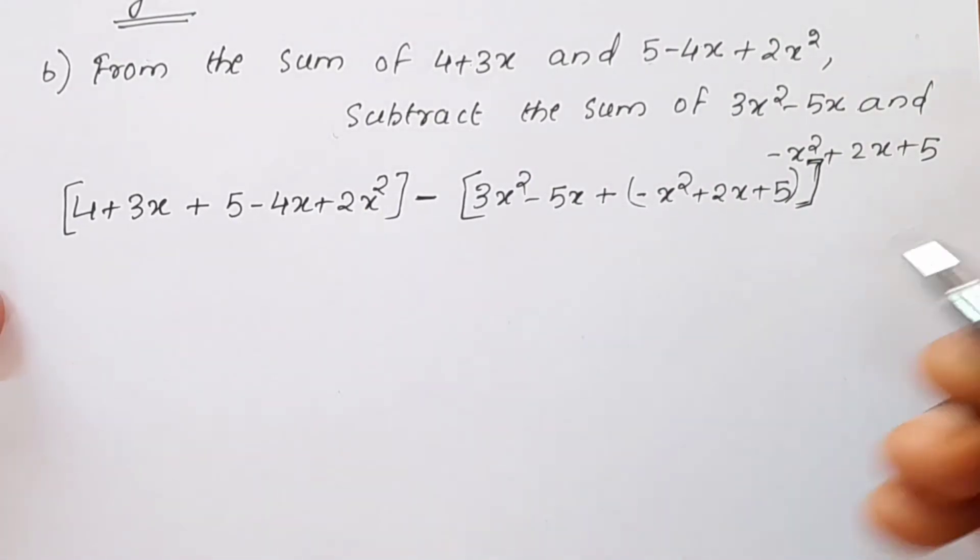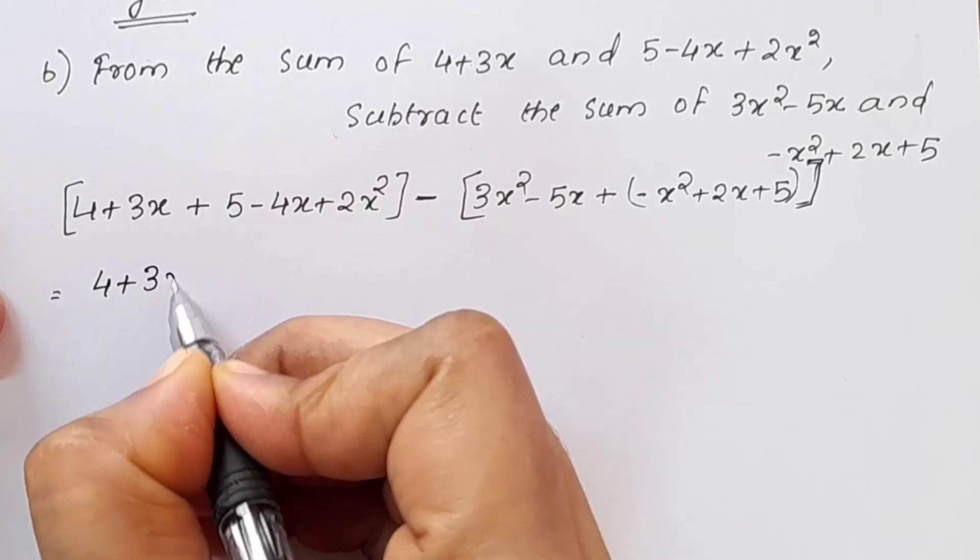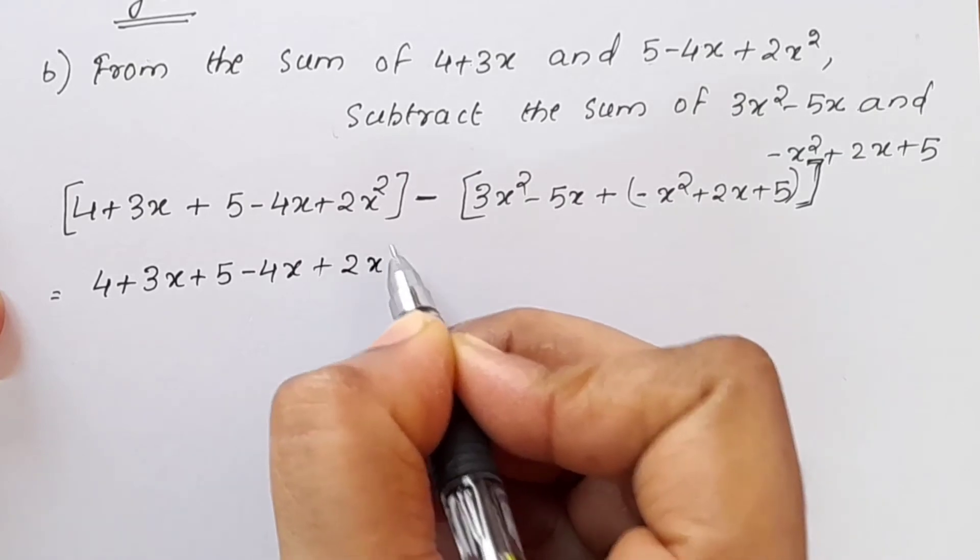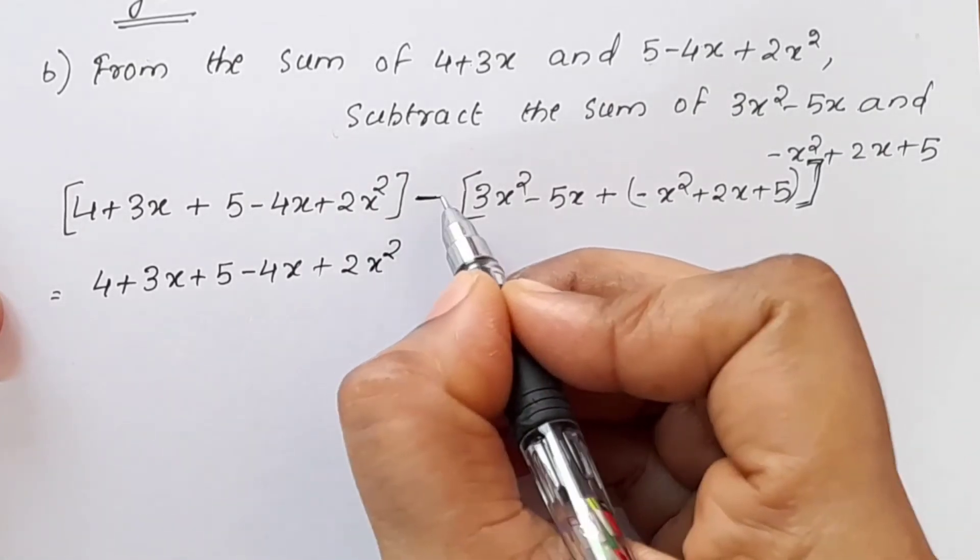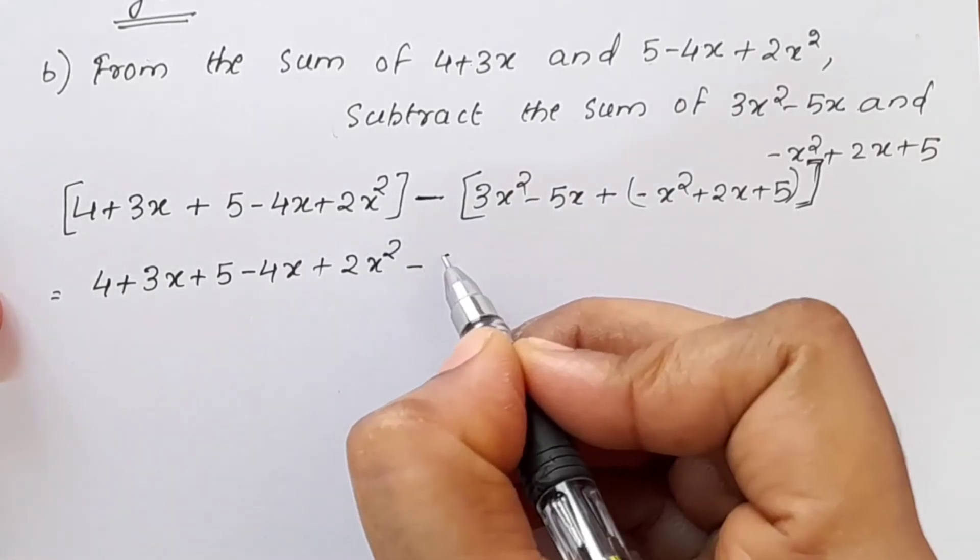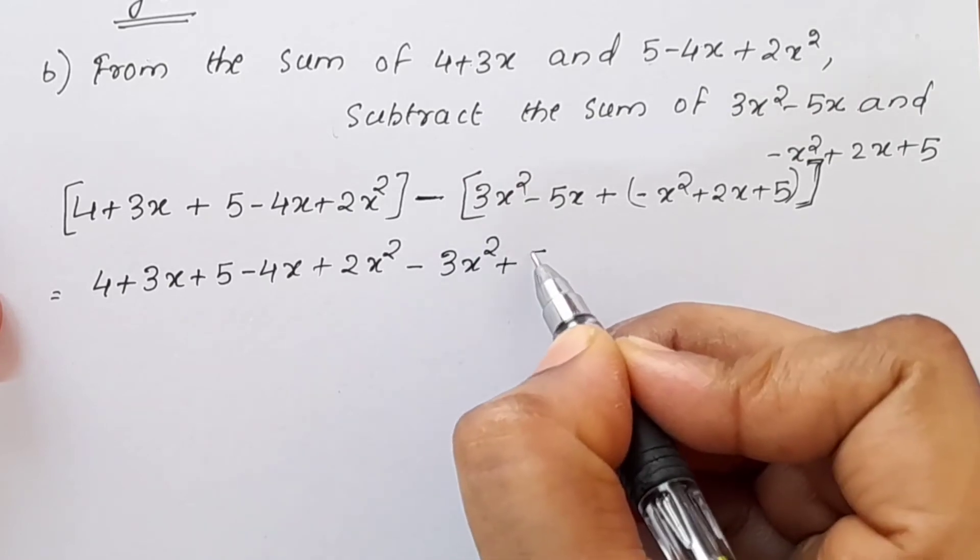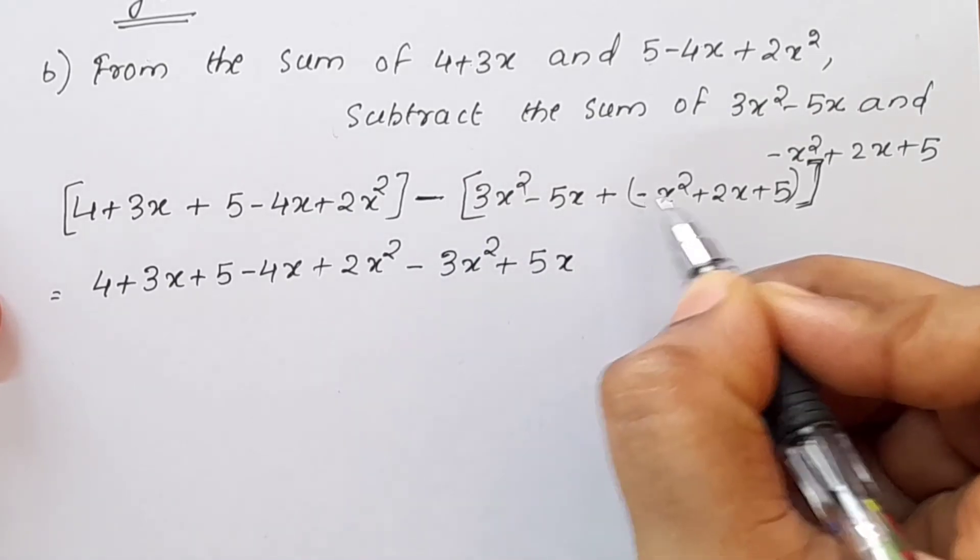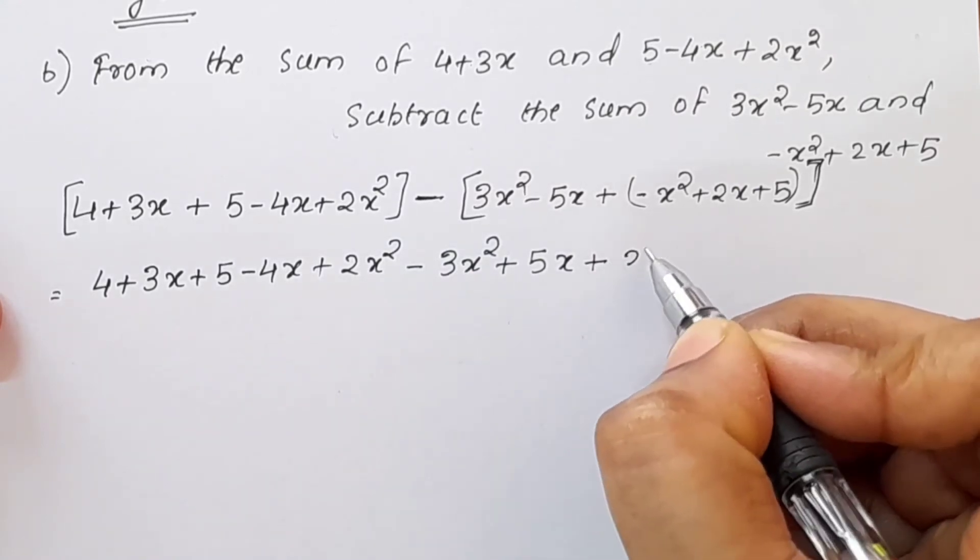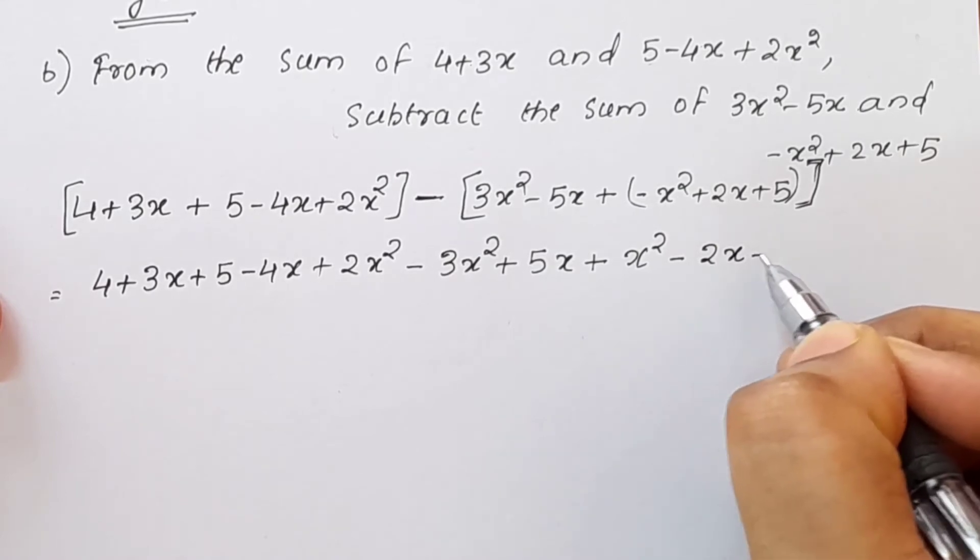In the bracket, this will be 4 plus 3x plus 5 minus 4x plus 2x square. In the bracket, the signs will change.